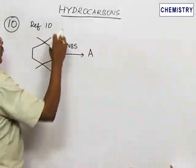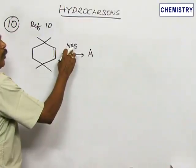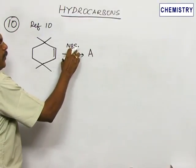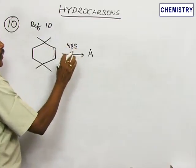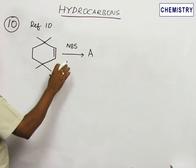In problem number 10, the compound undergoes bromination with NBS, which is N-bromosuccinimide. N-bromosuccinimide is normally used for brominating the terminal position, meaning side chain bromination.